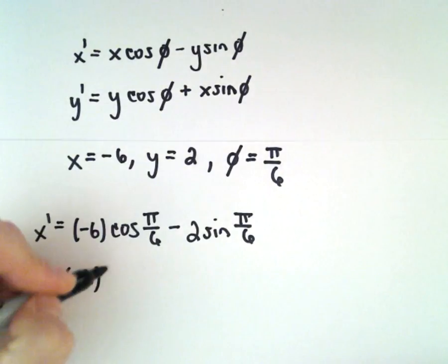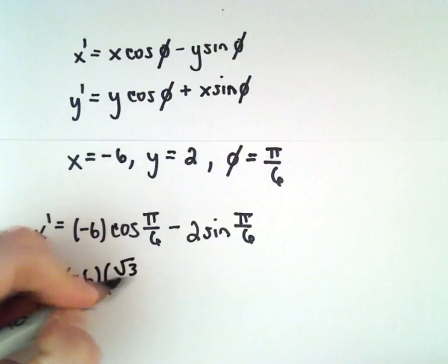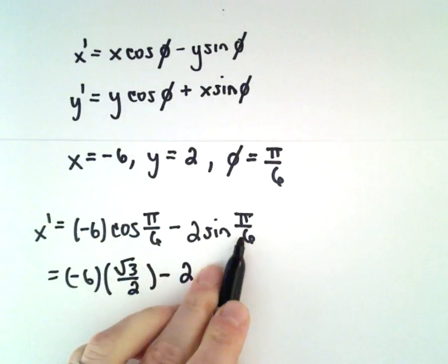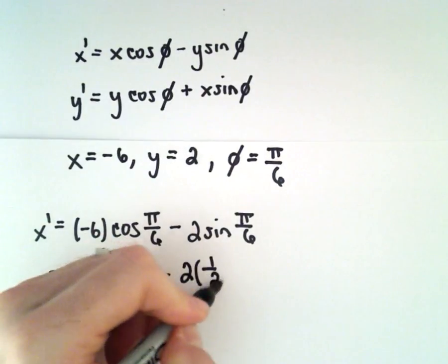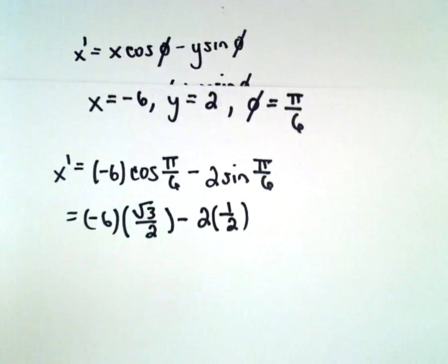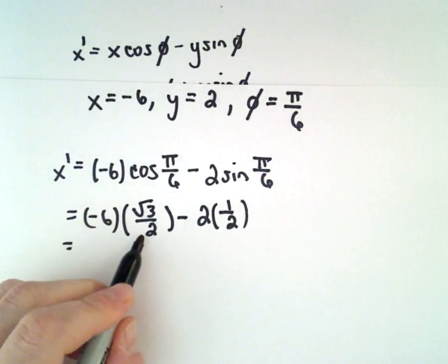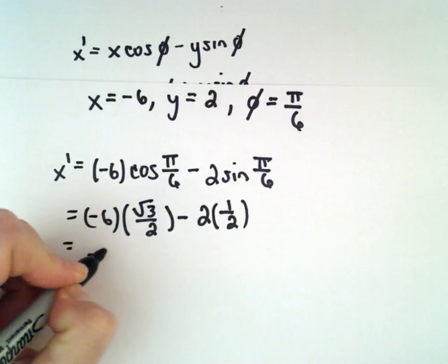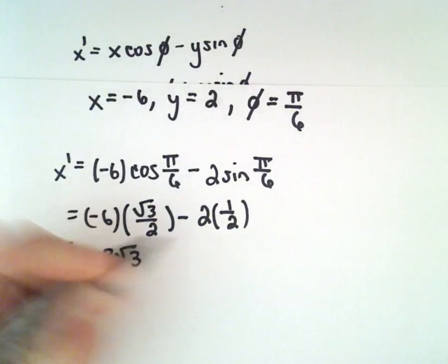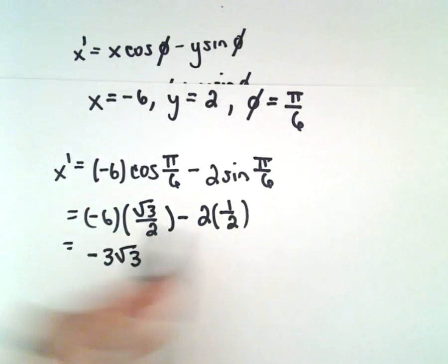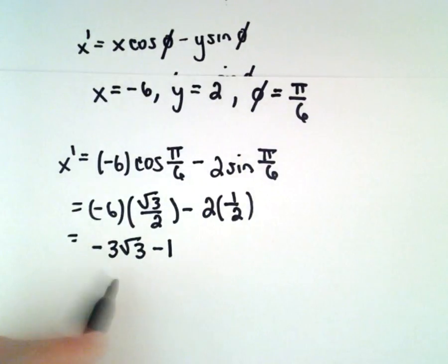Cosine of π/6 is √3/2, and sine of π/6 is 1/2. Simplifying: -6 divided by 2 gives -3 times √3, and -2 times 1/2 gives -1. So x' = -3√3 - 1.